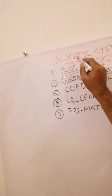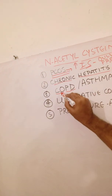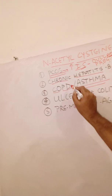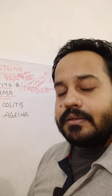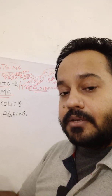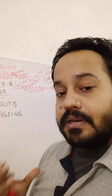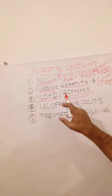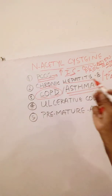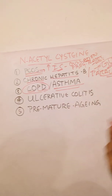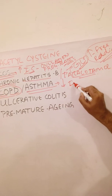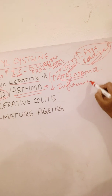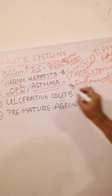N-acetylcysteine is also used in chronic obstructive pulmonary disease as well as asthma. In COPD like chronic bronchitis, you need a mucolytic agent so that you can thin the mucus and that mucus can be coughed out, clearing the respiratory passage and reducing inflammation. N-acetylcysteine is a very good mucolytic agent and it also greatly brings down inflammation of the respiratory passages, exerting therapeutic benefit in asthma.